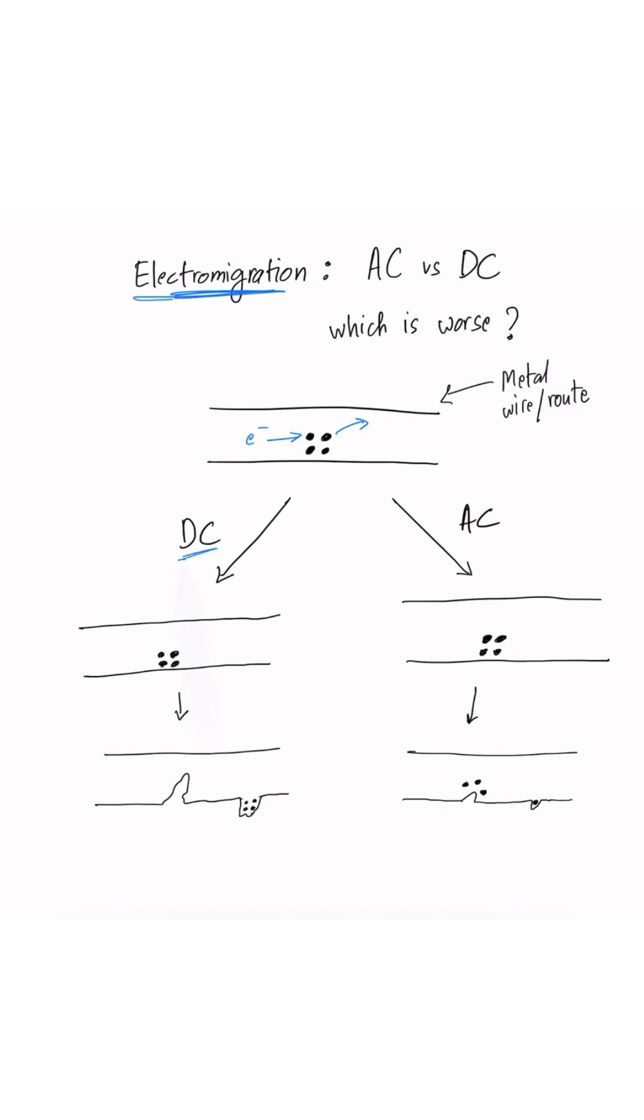In case of DC current, we know that electrons will always be flowing in the same direction, so atoms will always be displaced in one direction. This means that any voids or hills will be created much faster because atoms will always be displaced in one direction.